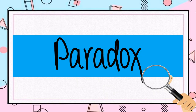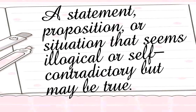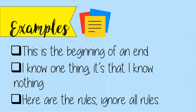Paradox is a statement, proposition, or situation that seems illogical or self-contradictory, but which upon further scrutiny may be logical or true. Examples: this is the beginning of an end. I know one thing — it's that I know nothing. Here are the rules: ignore all rules.